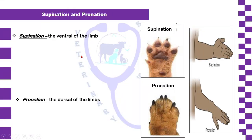Supination is the ventral part of a limb, as shown in the picture, whereas pronation is the dorsal part of a limb. Using a human hand as an example, the ventral side of the hand is called supination, whereas the dorsal part of the human hand is called pronation.